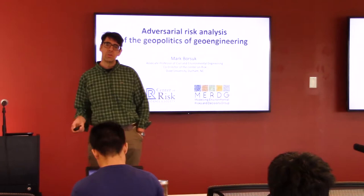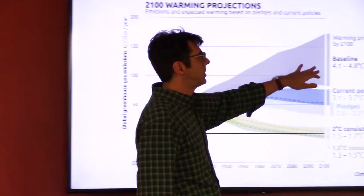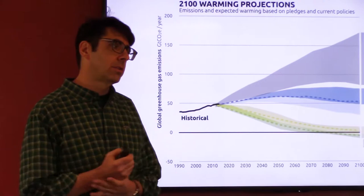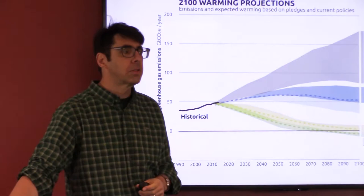I've titled it 'Adversarial Risk Analysis of the Geopolitics of Geoengineering' — simply looking at strategic interactions among nations. I'm sure you're all familiar with climate change. Under baseline projections, which certainly seems to be those we're on these days, the climate is likely to change quite a bit. This is looking at greenhouse gas emissions, but related temperatures are expected to be extreme.